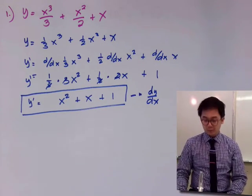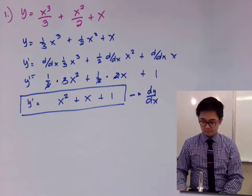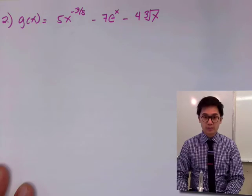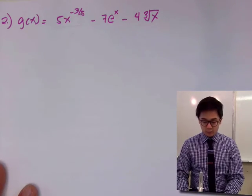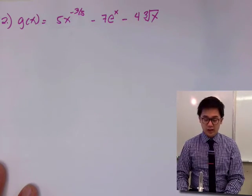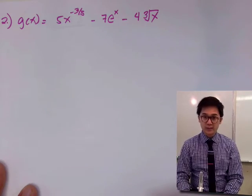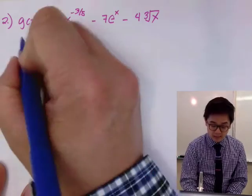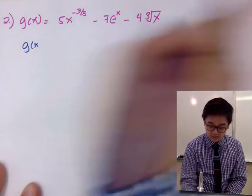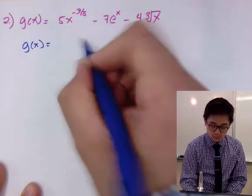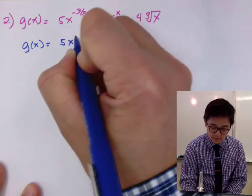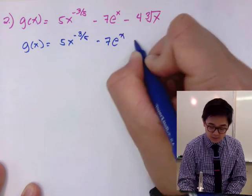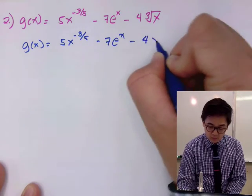Now let's move on to example number 2. We are going to use the power rule once again, but first we need to change any square roots or cube roots into fractional exponents. So we rewrite g(x) in the modified form.